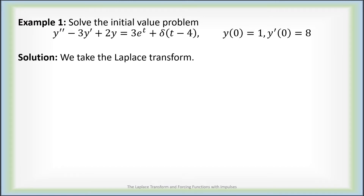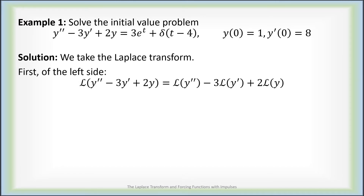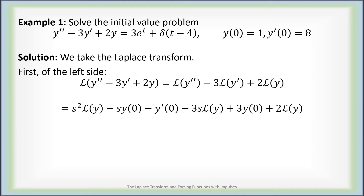Let's solve it by taking a Laplace transform. On the left side, L of y double prime minus 3y prime plus 2y — we split it apart using linearity, then using our known method of computing Laplace transforms of first and second derivatives and using our initial values y of 0 is 1 and y prime of 0 is 8. We end up with s squared minus 3s plus 2 times the Laplace transform of y minus s plus 5.